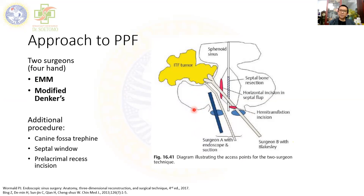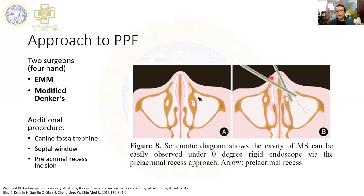Regarding the piriform aperture: for endoscopic medial maxillectomy we preserve the aperture, but to go further laterally into the infratemporal fossa we must remove it. Removing the anterior wall of the maxillary sinus can cause numbness of the anterior teeth due to sacrifice of the medial superior alveolar nerve. In simple cases such as a foreign body like a bullet in the pterygopalatine fossa with no tumor, a pre-lacrimal recess approach can be performed and closed afterwards.